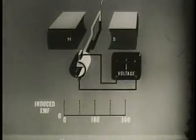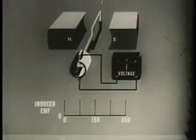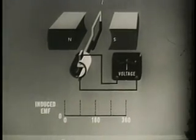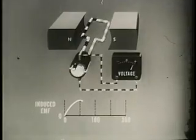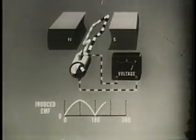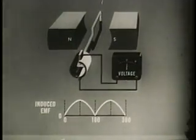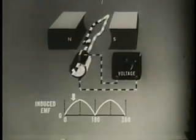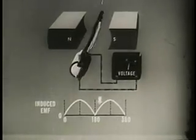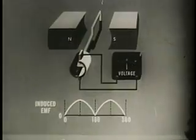Represented graphically, the output amplitude still varies. The DC is in the form of pulses — it is a pulsating direct current, or PDC. The pulsation from zero to maximum, twice for each revolution of the loop, is called ripple.